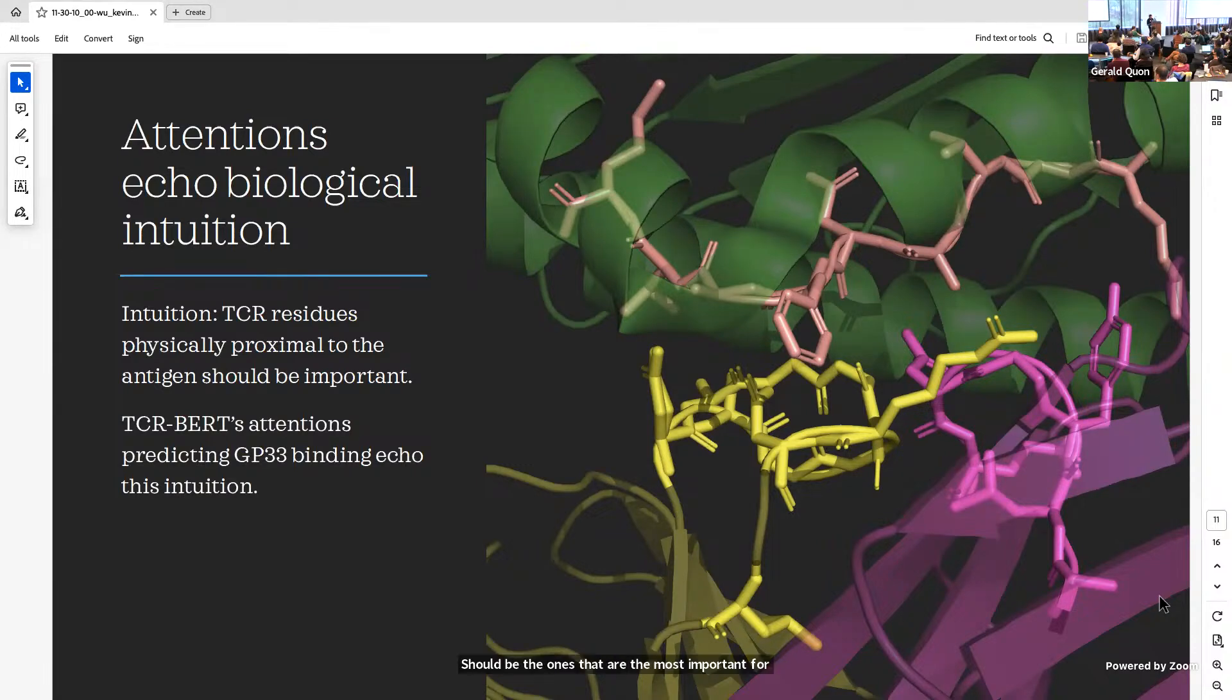What we did is for a system, we looked at the attentions, the contributions of each amino acid to TCR-BERT predictions, and we highlight that interaction here. The green region represents the major histocompatibility complex that's basically just displaying the antigen. This salmon-colored molecule is the antigen itself, the thing we want to recognize, and the pink and the yellow are the T-cell receptor, TCR sequences. Within the pink and the yellow, these solid-colored, bolded molecules are the regions that have the highest attention, the most important things for predicting. We see that the things that are most important are also the things that are most physically close. That mirrors our biological understanding of how this system should be behaving and provides some understanding of why this model might be working so well.